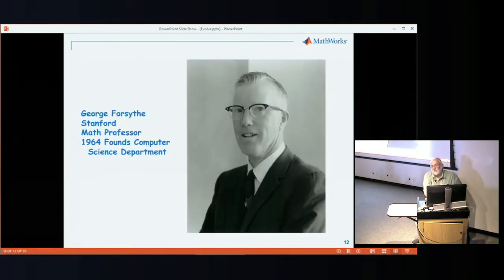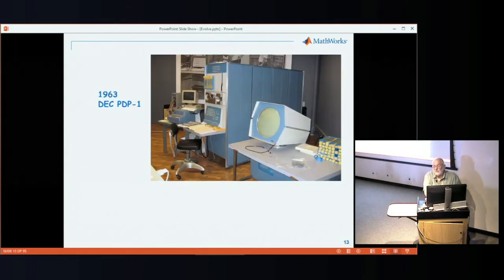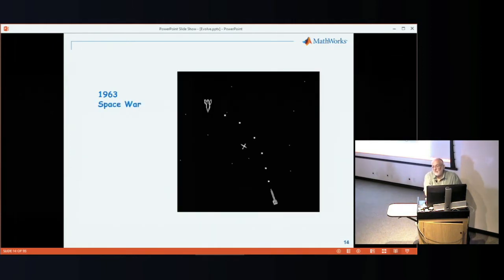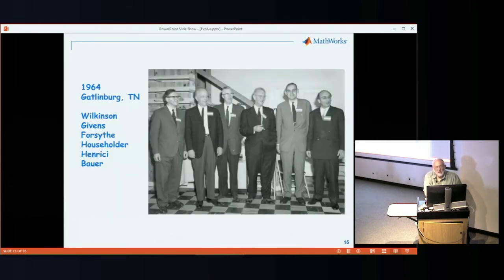Came time to go to graduate school. I went north to Stanford. George Forsyth was a math professor, but he was in the process of starting the computer science department at Stanford, now world famous. I went there as a math student but ended up four years later as a temporary instructor in the new computer science department. We used this machine, a DEC PDP-1, DEC's first machine. There's a display on that machine. A guy named Slug Russell from MIT programmed the world's first video game that we played on that machine.